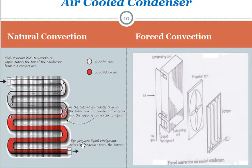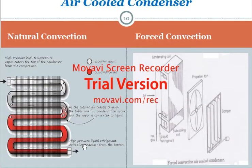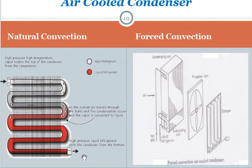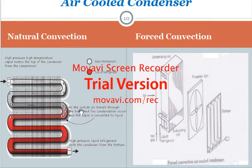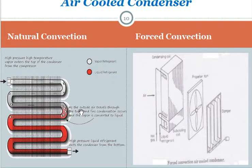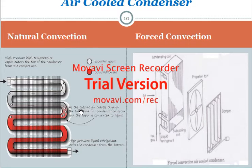Once the vapor changes to liquid, the high-pressure liquid refrigerant exits the condenser from the bottom at low temperature. For forced convection, a propeller fan is used to push air through the fins at high velocity, supplying more airflow than natural convection. This system is more effective but requires more energy for the fan motor.